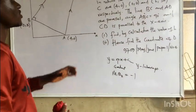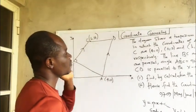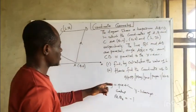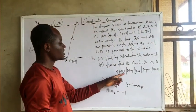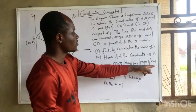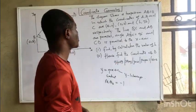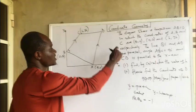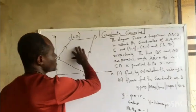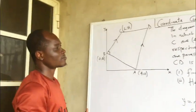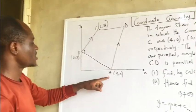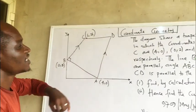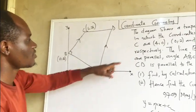We want to look at a Cambridge question — paper 1, pure mathematics, 9709, May/June, paper 1, question 4, under coordinate geometry. The question involves a diagram showing a trapezium with points A, B, C and D, where point A is at coordinates (4, 0).